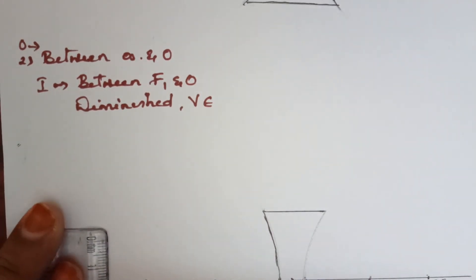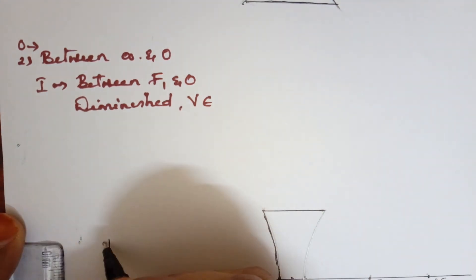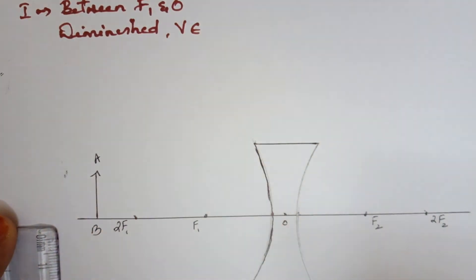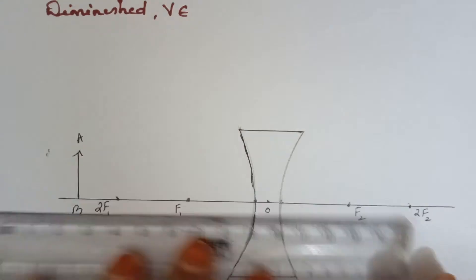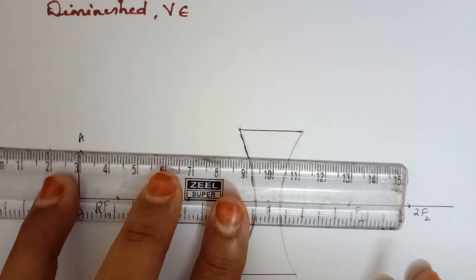Between infinity and O, so I'm going to draw a 1.5 centimeter long object. I'm going to name it as AB. I have drawn it beyond 2F1. So as usual, you know that one ray of light always travels parallel to the principal axis as done in the lens diagram.